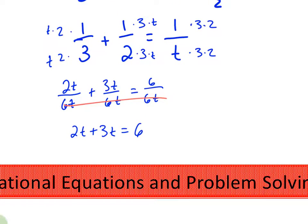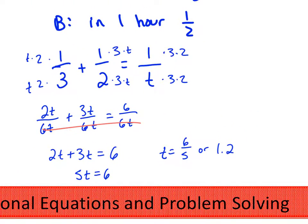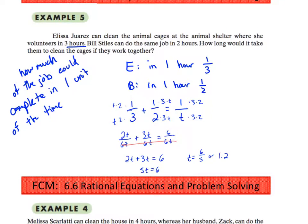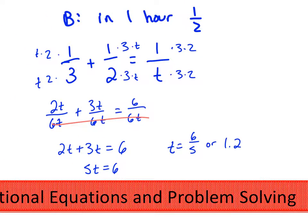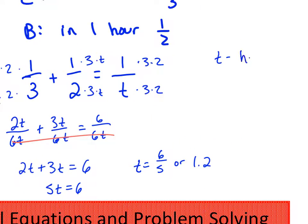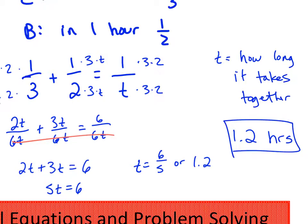This is how you're going to set up these problems every single time. This is going to be the easiest way to set them up. So 5T equals 6, T equals 6 fifths or 1.2. So that means in one hour, working together, they could complete one out of 1.2, which is pretty good. That's like almost the entire job there. So how long would it take them to complete the cages if they work together? T represents how long it would take them to complete the job. T is how long it takes together. So 1.2 hours is our answer there.